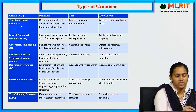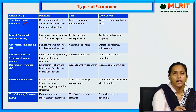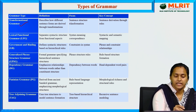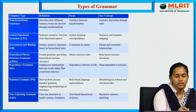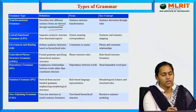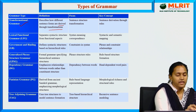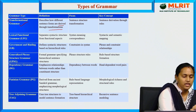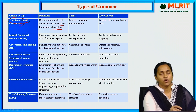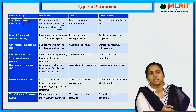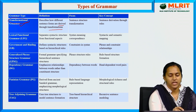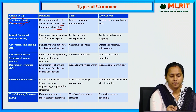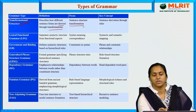Transformational grammar describes how different sentence forms are derived through transformations. It mainly focuses on sentence structure transformation.